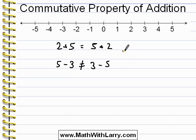This property is called the Commutative Property. It's just a fancy word that means we can add numbers in whatever order we'd like — we can swap the order in which we add them.